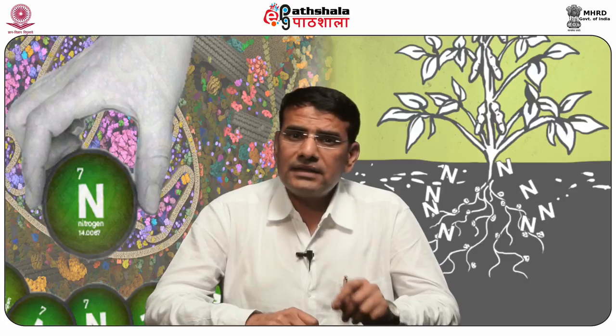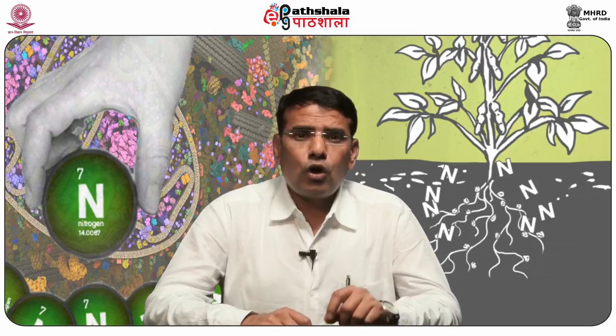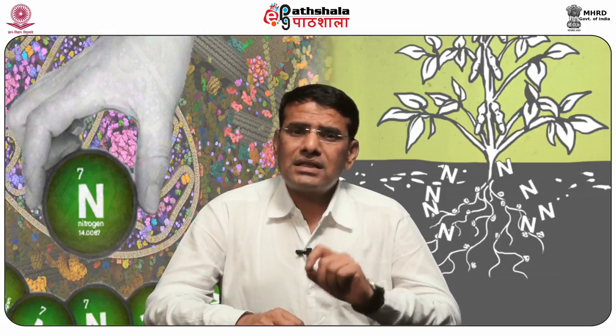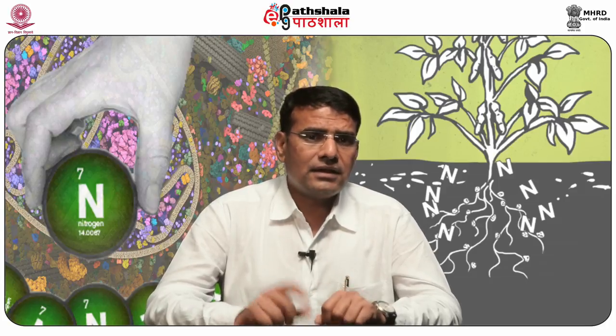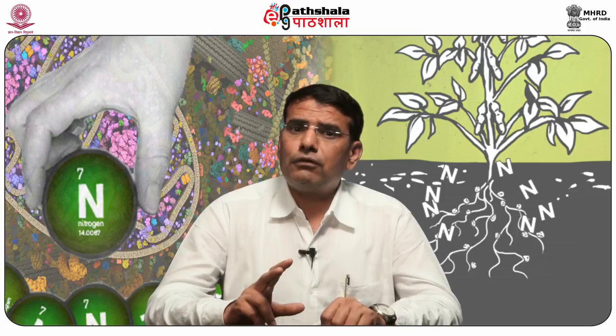Oxidative phosphorylation is the metabolic pathway in which cells use enzymes to oxidize nutrients, thereby releasing energy which is used to reform adenosine triphosphate. In most eukaryotes, this takes place inside mitochondria. Almost all aerobic organisms carry out oxidative phosphorylation. This pathway is probably so pervasive because it is a highly efficient way of releasing energy compared to alternative fermentation processes such as anaerobic glycolysis.